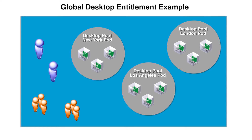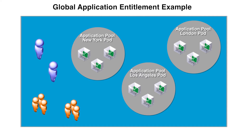In this example, a global desktop entitlement contains desktop pools from three different pods in three different data centers. Similarly, global application entitlements can contain application pools from different pods in different data centers.